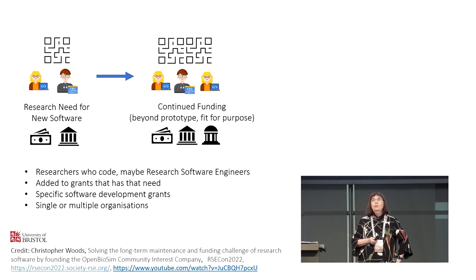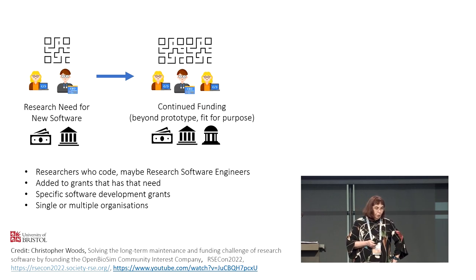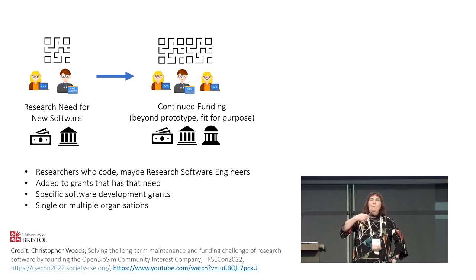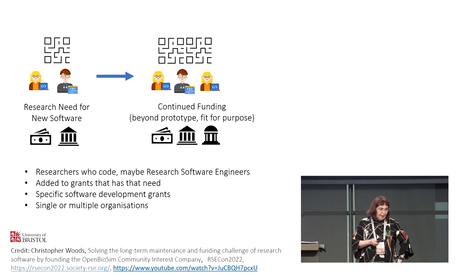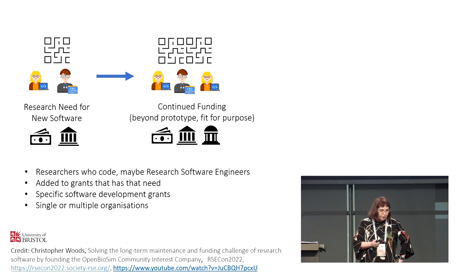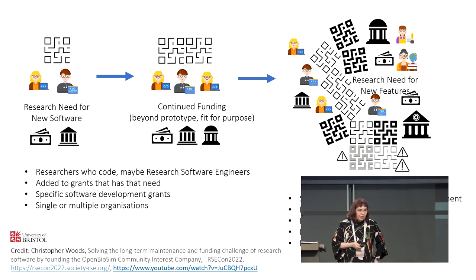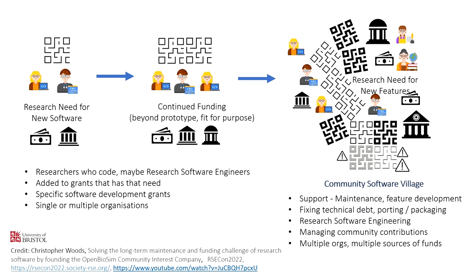Christopher Woods has a piece of software he's now taking into sustainability. First you have a research need, so you build new software. Then you get more funding and develop it into a more substantial prototype, making it fit for purpose for people wider than the originators. Here you might have researchers who code, typically in a single organization. Then you go into a community software village state, where you have multiple income streams and must do maintenance and software support — community management becomes more than just having fun making the code.